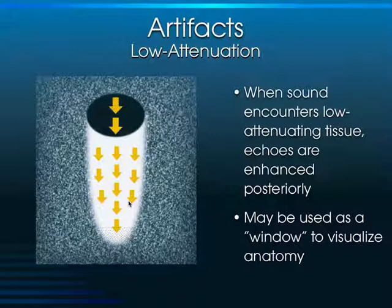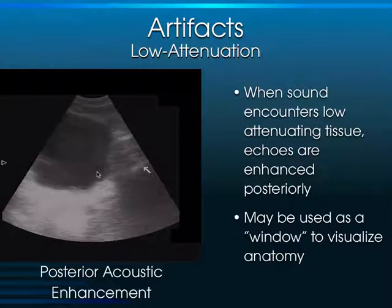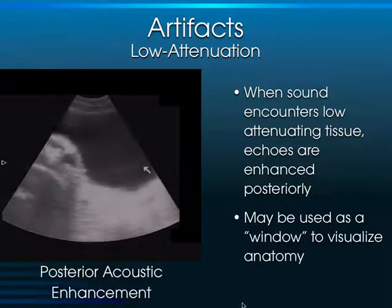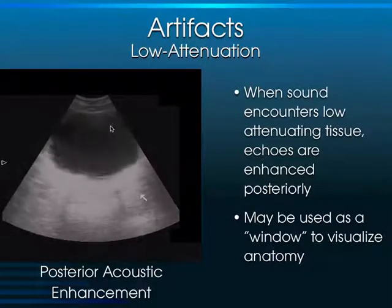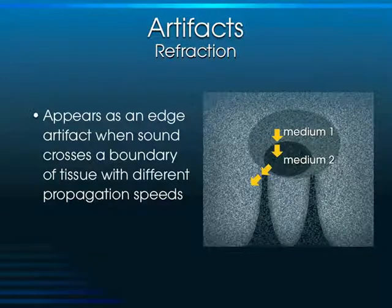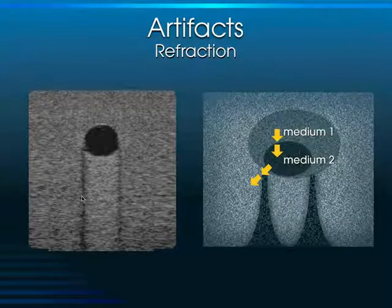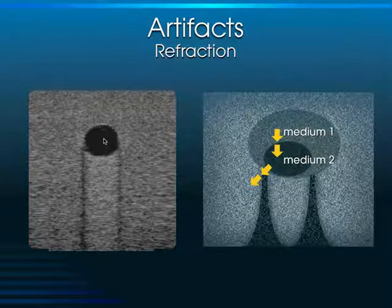The low attenuation artifact occurs with fluid structures like the bladder — everything behind the bladder becomes hyperechoic and you may need to turn down the far field gain to compensate. Refraction occurs when sound passes between two media of different densities and gets redirected, similar to Snell's law. This creates shadows along the edges of organs — lateral cystic shadowing — because a cystic structure's density is less than surrounding tissue, causing refraction artifact along its edges.